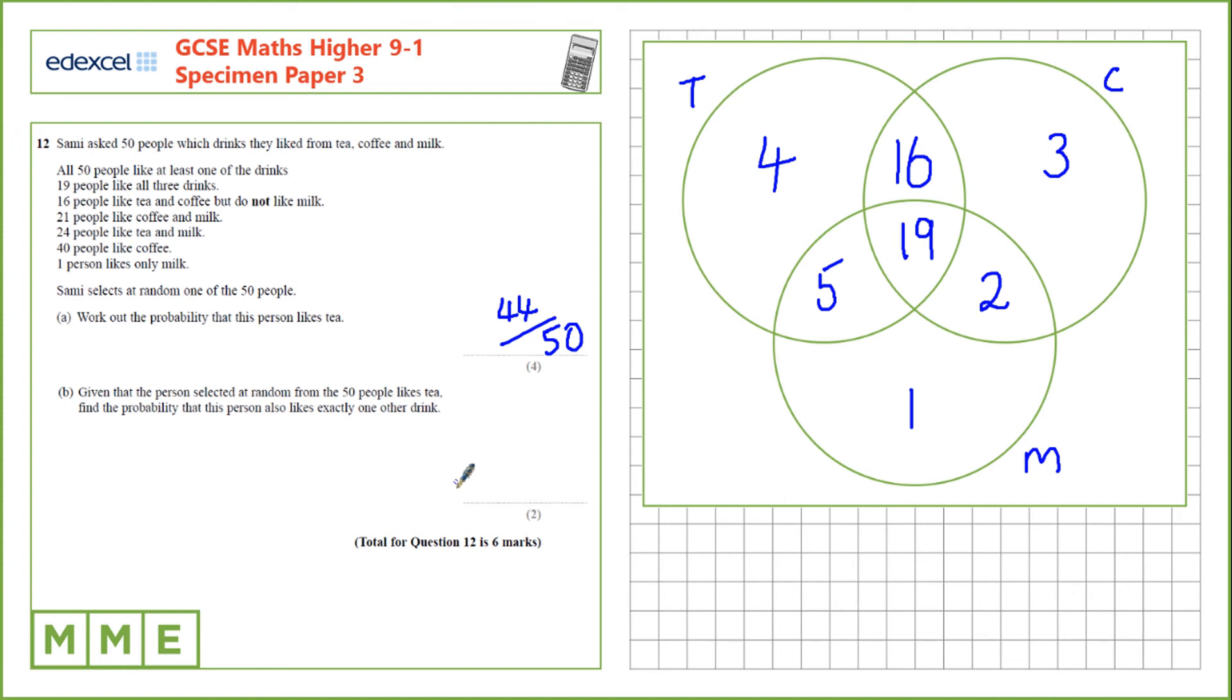Given that the person selected at random from the 50 people likes tea, we find the probability that this person also likes exactly one other drink. So in this case, we know that the person likes tea in the first place, so our total is the 44 people that like tea.